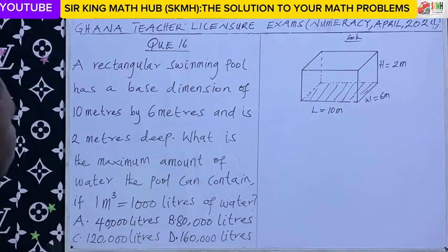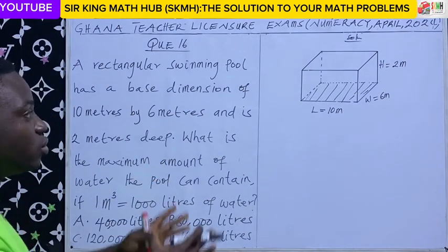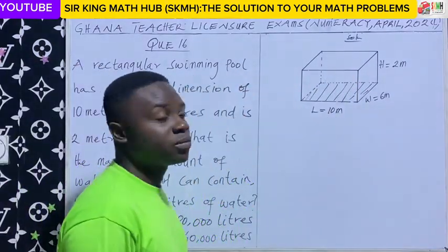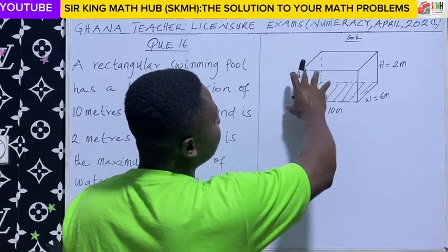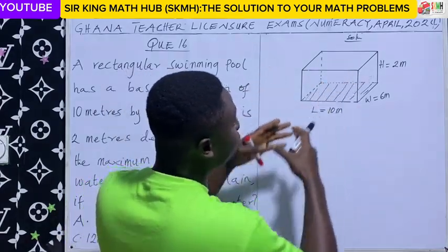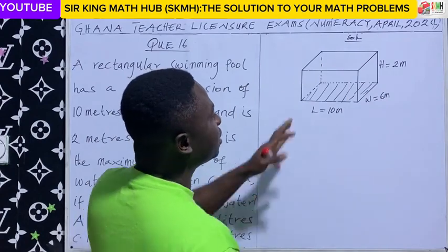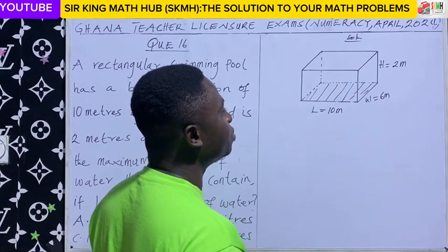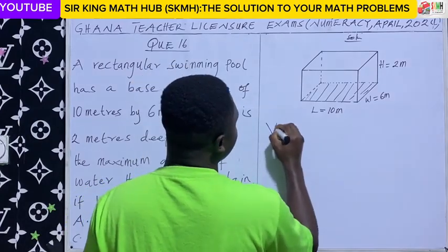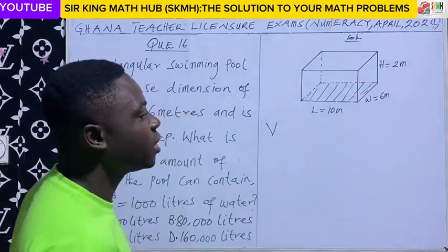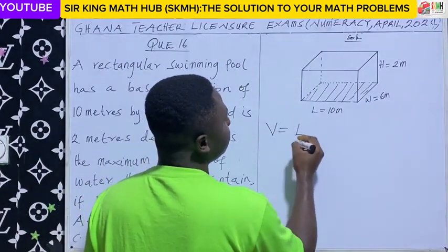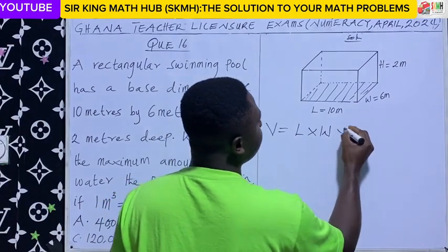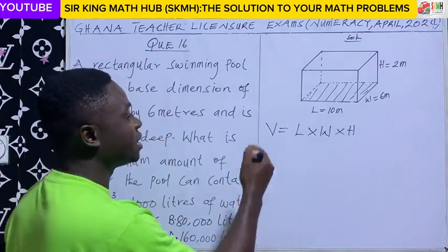Now we want the maximum amount of water the pool can contain. The maximum amount of water it can contain also represents the volume of water this pool can contain. To calculate the volume of a rectangular pool, we are going to use the formula: length times width times height.